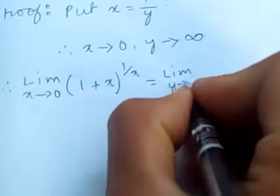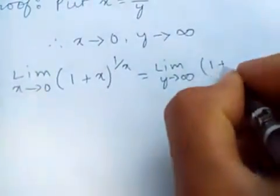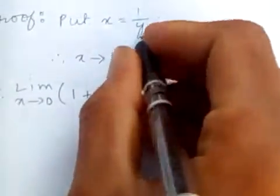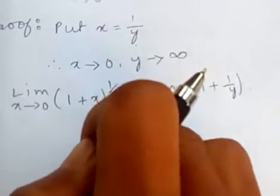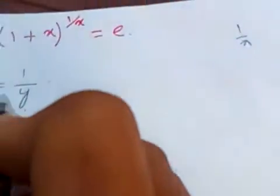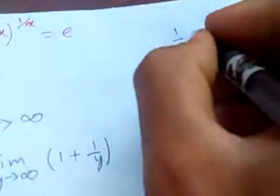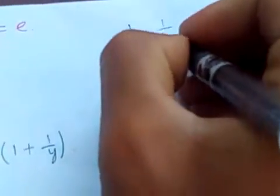limit y tends to infinity of (1 + 1/y) to the power... here x is 1/y. We put x equal to 1/y, so 1 divided by 1/y is nothing but y. So we have y as the exponent.